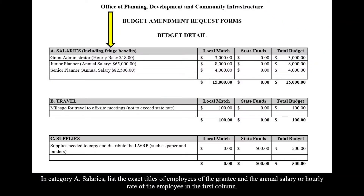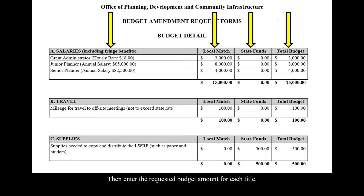In Category A, Salaries, list the exact titles of employees of the grantee and the annual salary or hourly rate of the employee in the first column. Then enter the requested budget amount for each title.